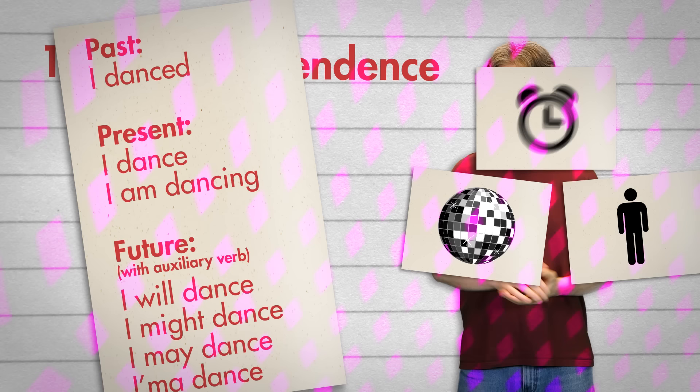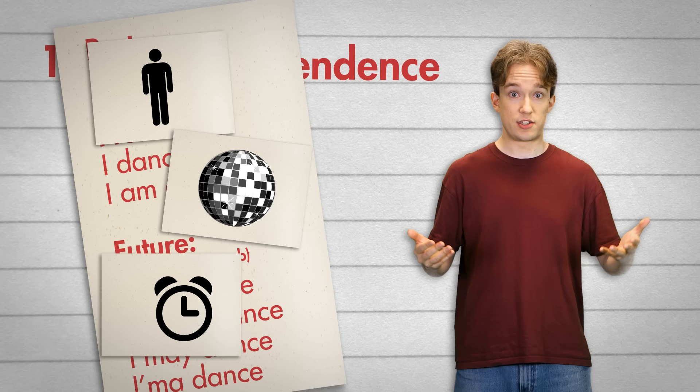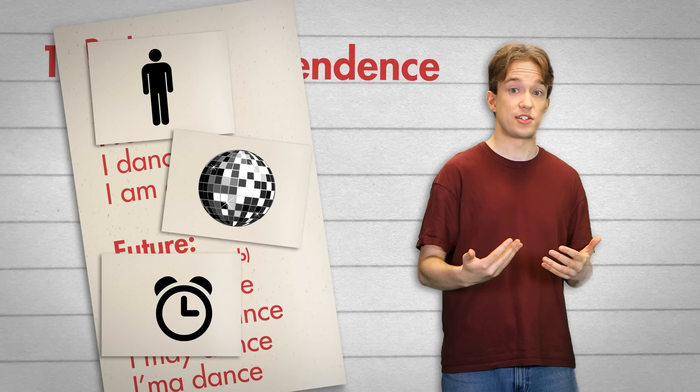Chinese, on the other hand — verbs don't conjugate. In most cases, the meaning is obvious from context. I don't want to imply that Chinese doesn't have a tense system; it does. It's just not a requirement. It's not baked into every single sentence by default.